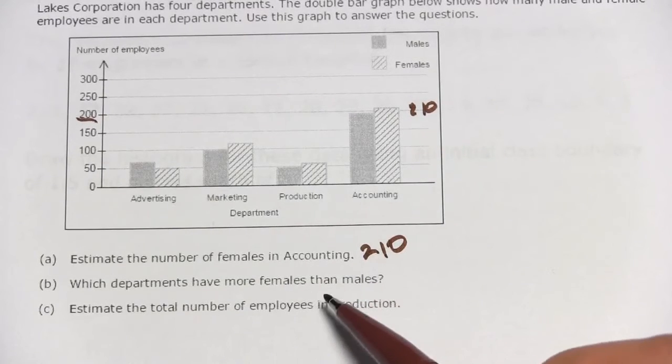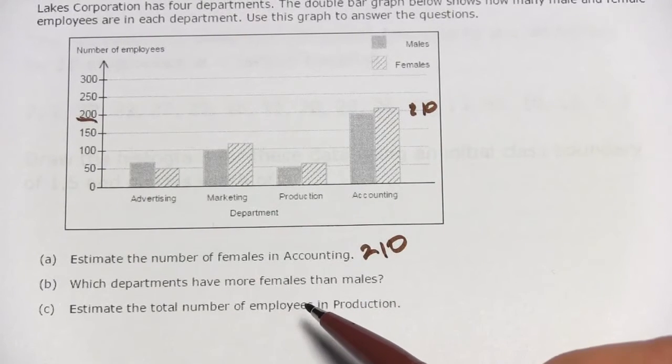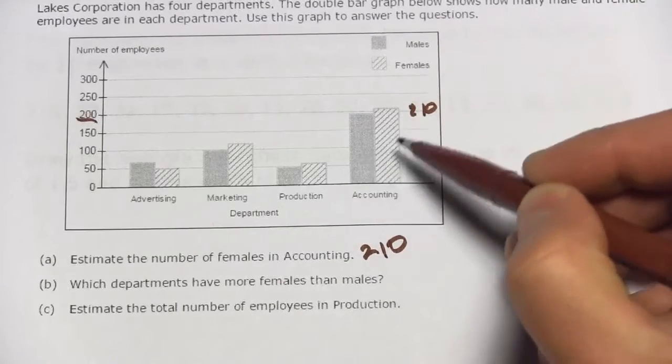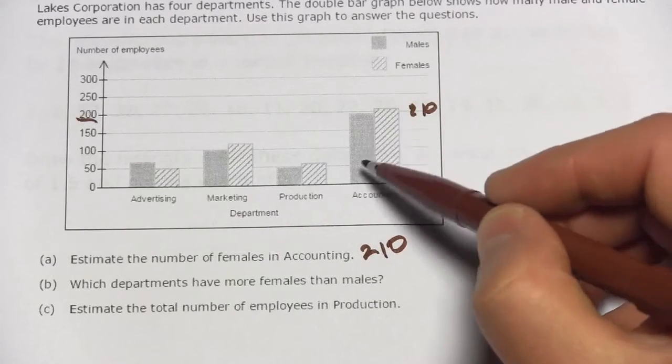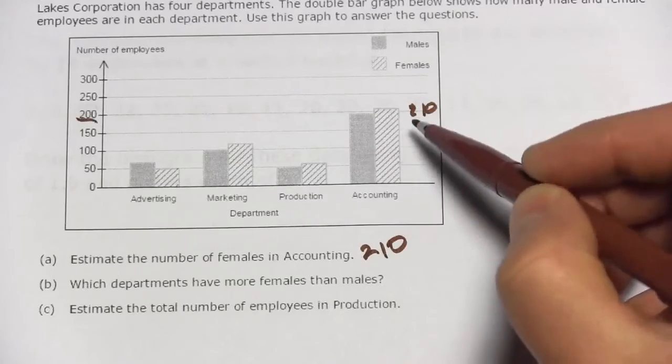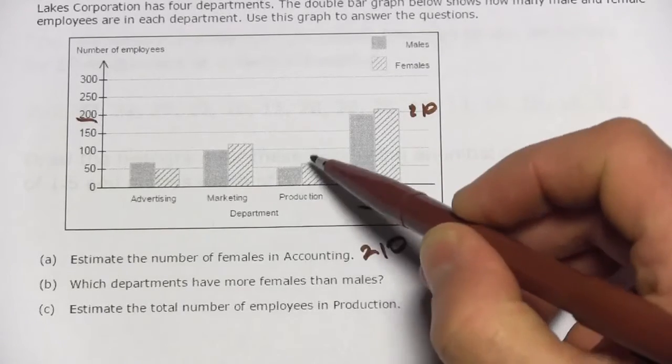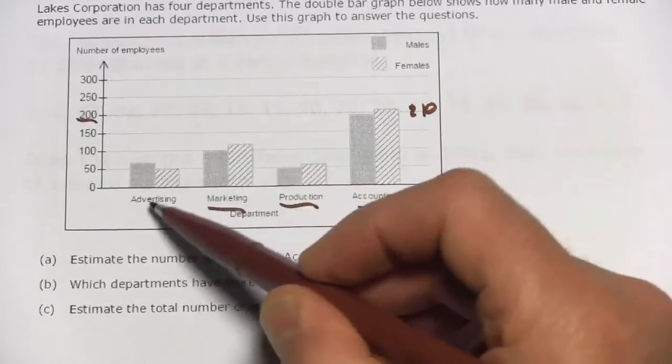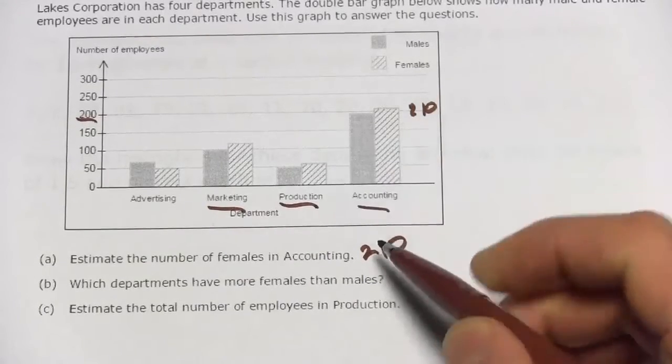Question B says, Which departments have more females than males? That's easy. We just want to look for where the striped bar is higher than the solid bar. So definitely accounting, production, marketing—everything except for advertising. So those three.